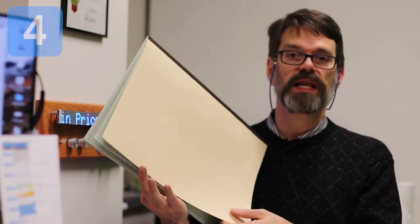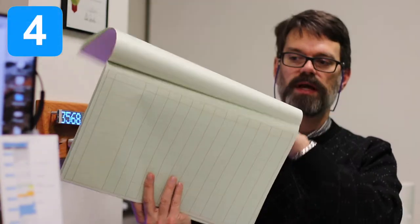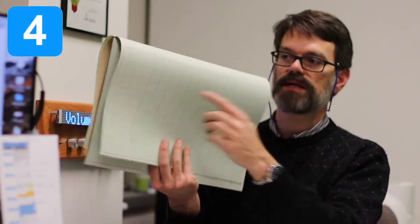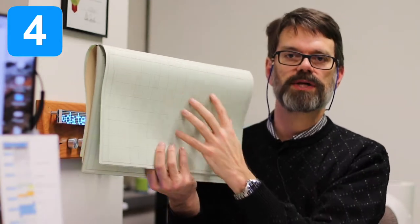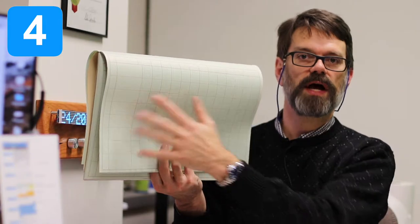So this next one is a ledger or spreadsheet. This is what accountants use to actually tally up things. So they had rows and columns here, and you would actually calculate everything out on this spreadsheet.